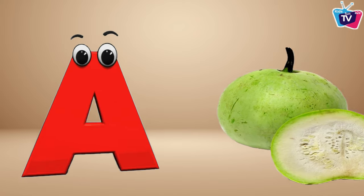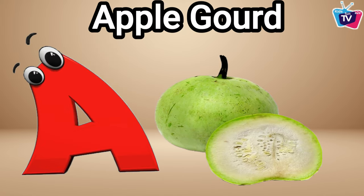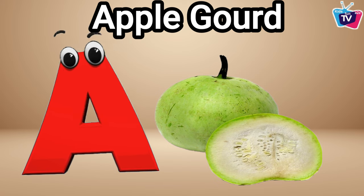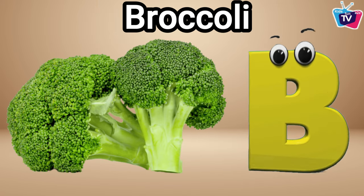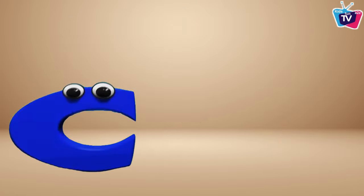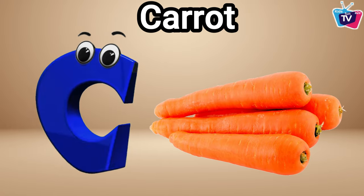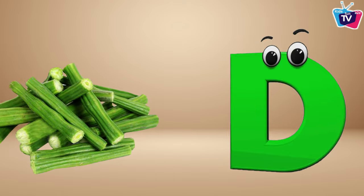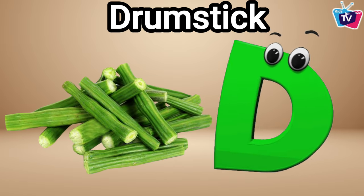A is for apple gourd, apple gourd. B is for broccoli, broccoli. C is for carrot, carrot. D is for drumstick, drumstick.